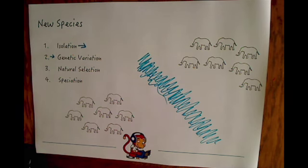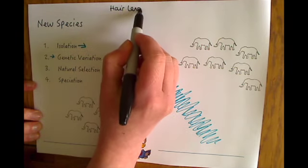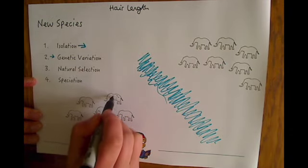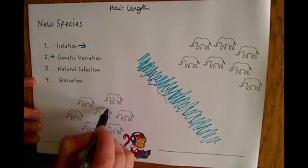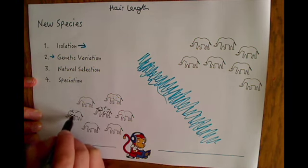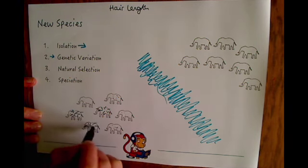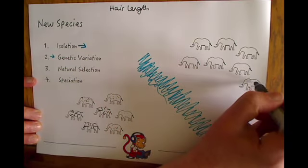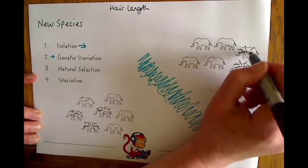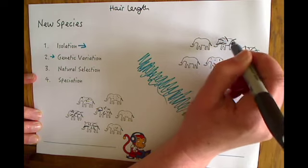For example, if we take the characteristic of hair length, then naturally some elephants will have short hair and some will have long hair. Just naturally, some elephants have long hair and some have short hair in both populations. They vary across many different alleles, but we're going to concentrate on hair length for the purposes of this video.